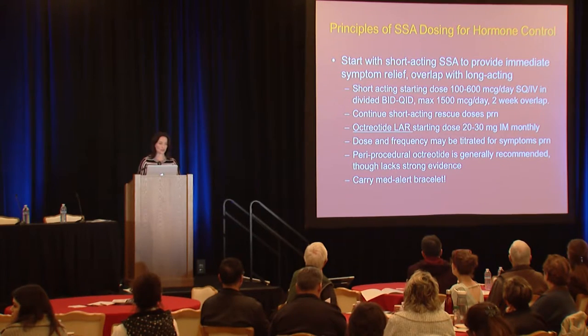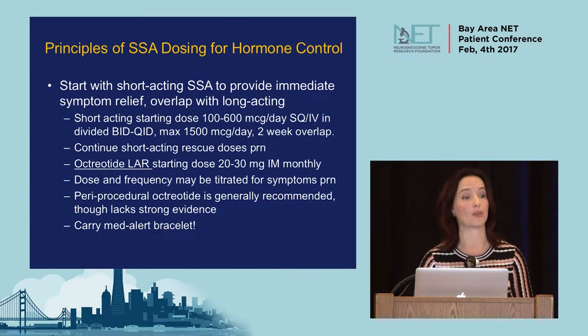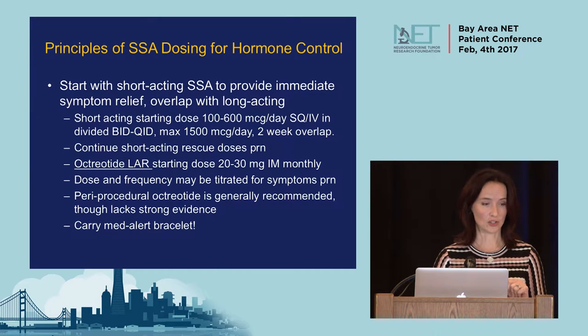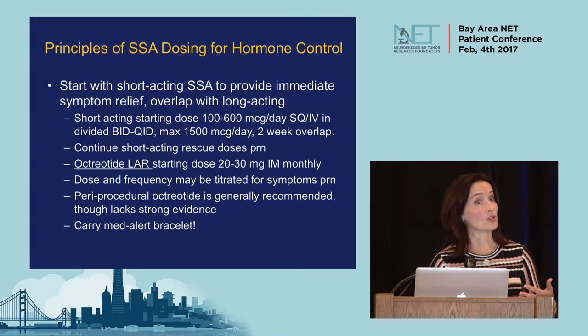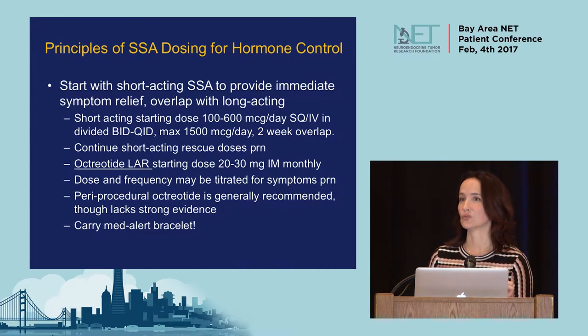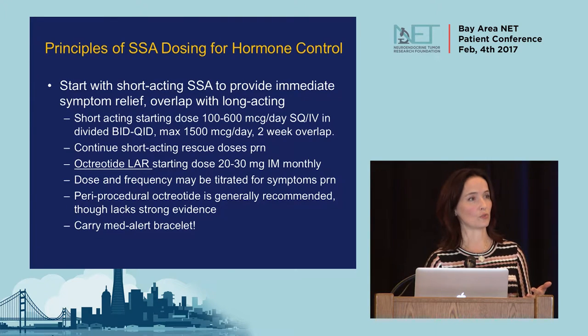For hormone control dosing, if a patient has carcinoid syndrome we typically start both short-acting and long-acting forms. Short-acting octreotide is given as a subcutaneous injection, like an insulin shot, one to four times per day for more immediate relief. We also simultaneously start the long-acting shot, given monthly. Short-acting rescue doses can be continued as needed. Before a big surgery — or even a major dental procedure — octreotide should be given before and/or after to reduce the risk of carcinoid crisis. A MedAlert bracelet is particularly advocated for carcinoid syndrome patients.